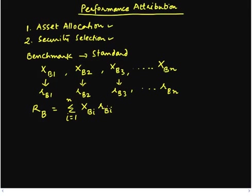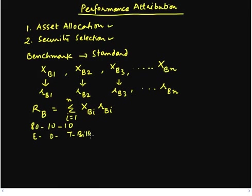Before we move further, we need to ask why we have decided to allocate what we allocate to each asset class. For example, if I say I'm going to allocate 80, 10, and 10 over equity, debt, and T-bills, I need to provide a justification for this 80-10-10 scheme. Somebody could ask me: why not 70-20-10?